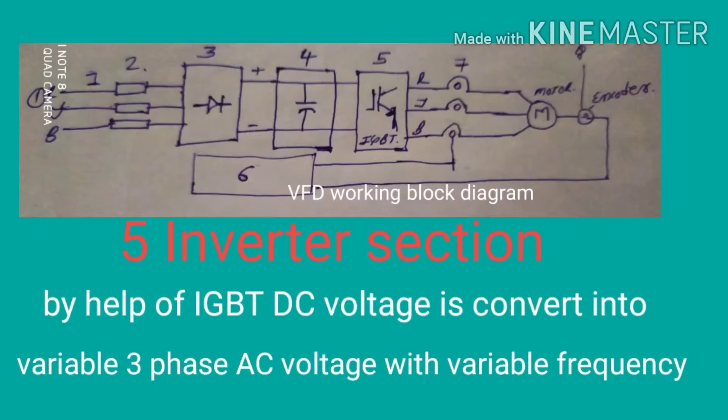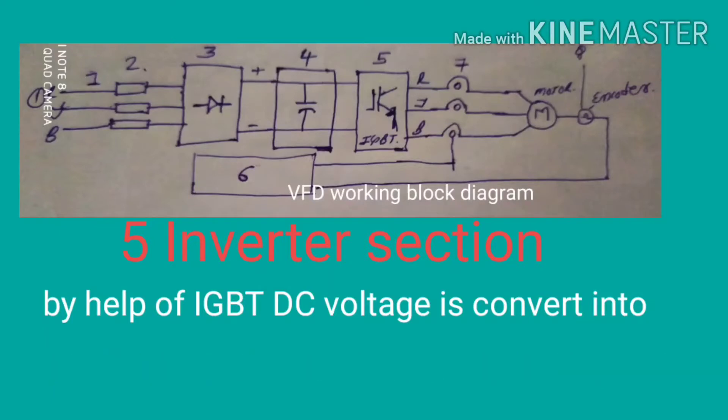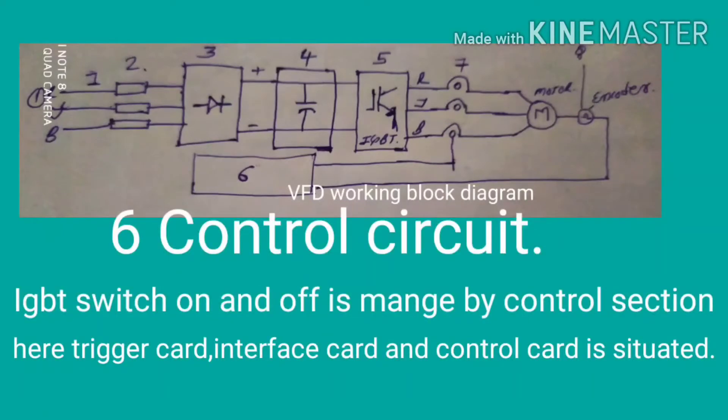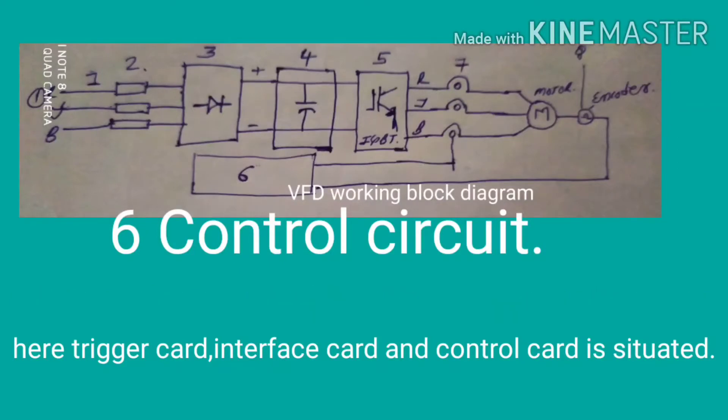By help of IGBT, DC voltage is converted into variable three-phase AC voltage with variable frequency. So here we have shown the IGBT converts DC voltage into variable AC voltage. Now, the sixth number is the control circuit.